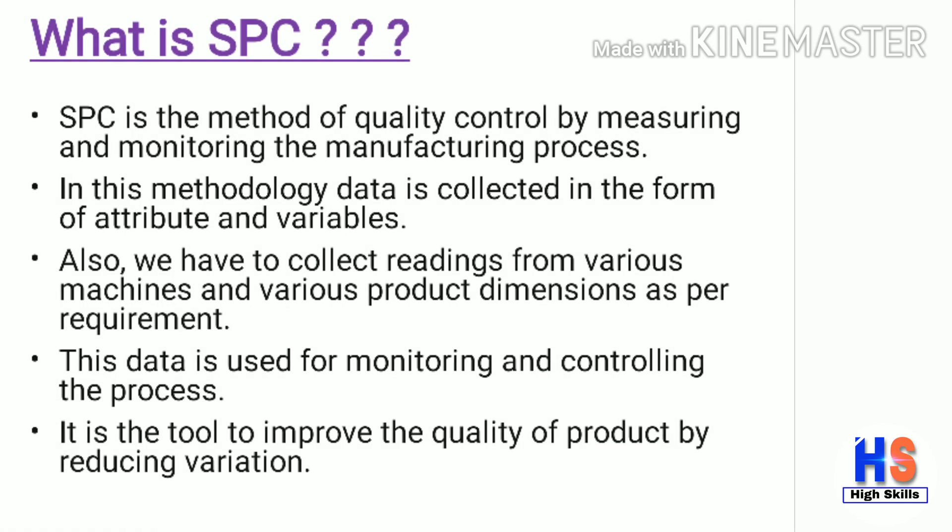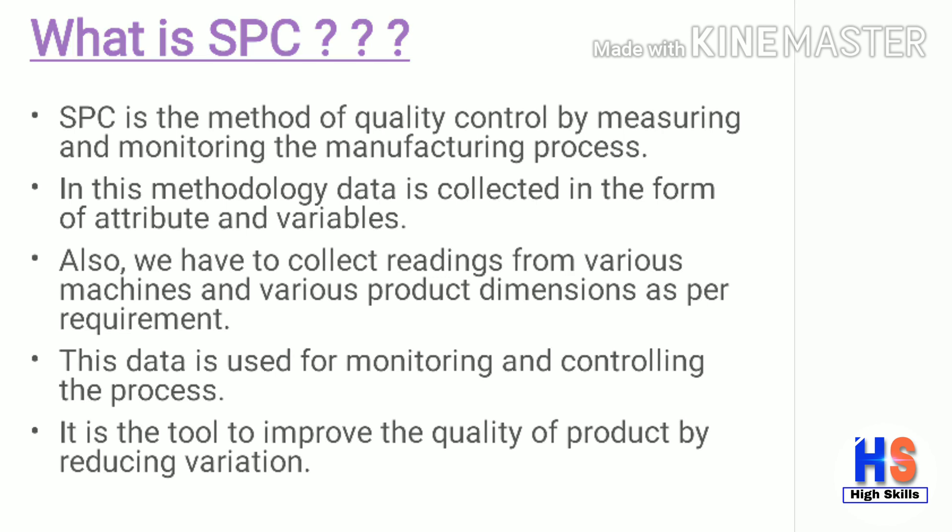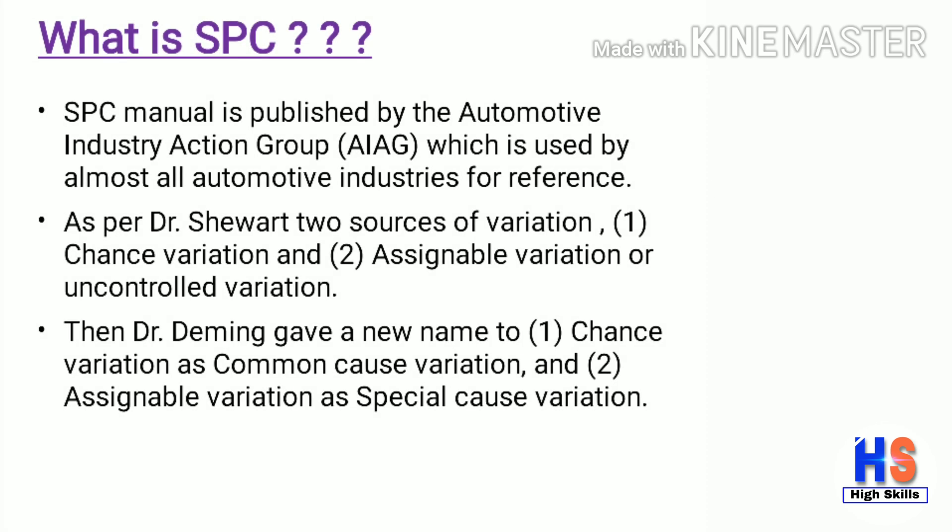Now let's talk about what is SPC. SPC is the method of quality control by measuring and monitoring the manufacturing process. In this methodology, data is collected in the form of attributes and variables. We also have to collect readings from various machines and product dimensions as required. This data is used for monitoring and controlling the process. It is a tool to improve the quality of a product by reducing variation. The SPC manual is published by the Automotive Industry Action Group (AIAG), which is used by almost all automotive industries for reference.